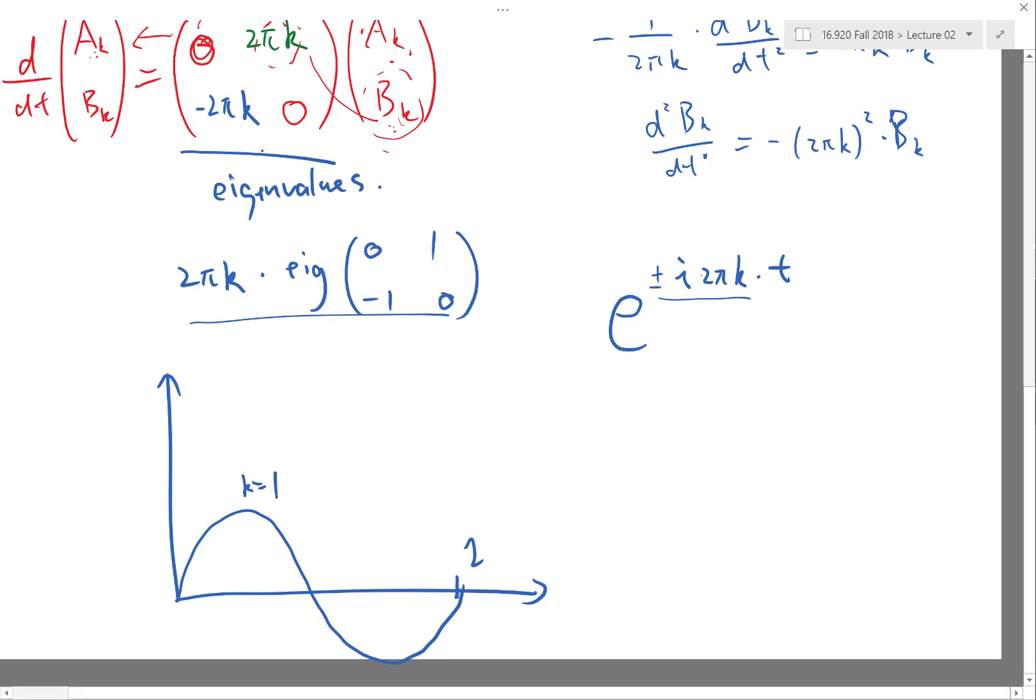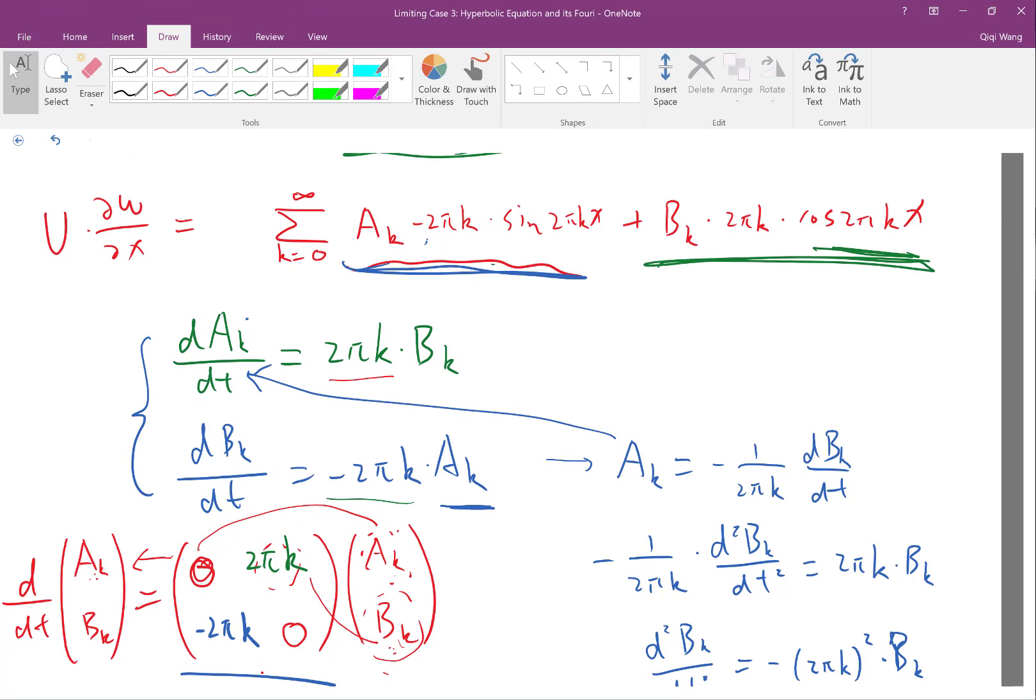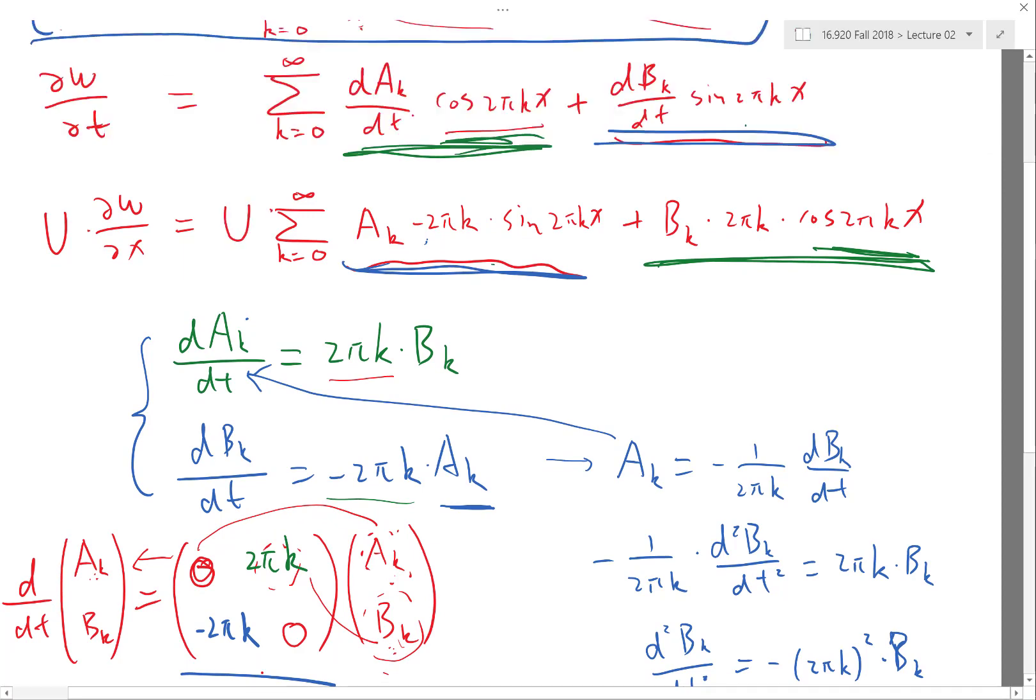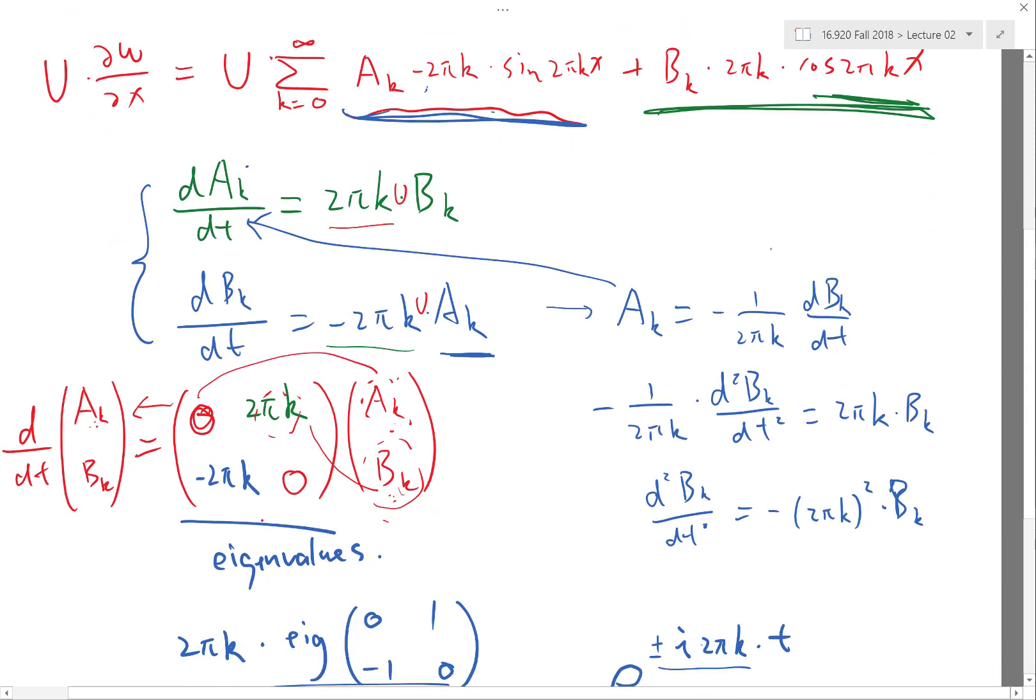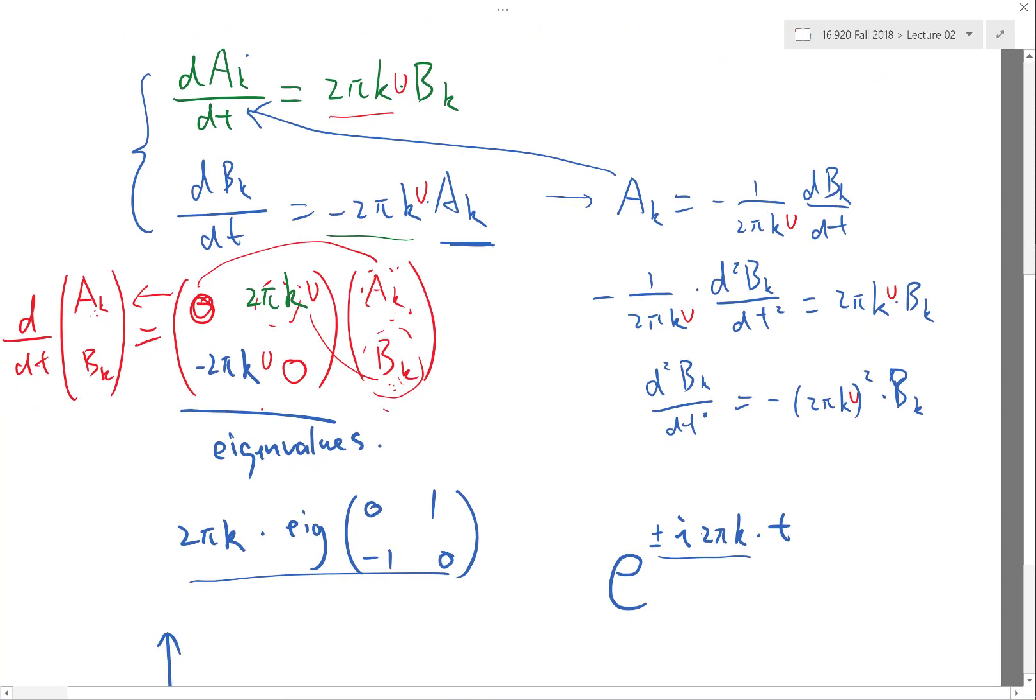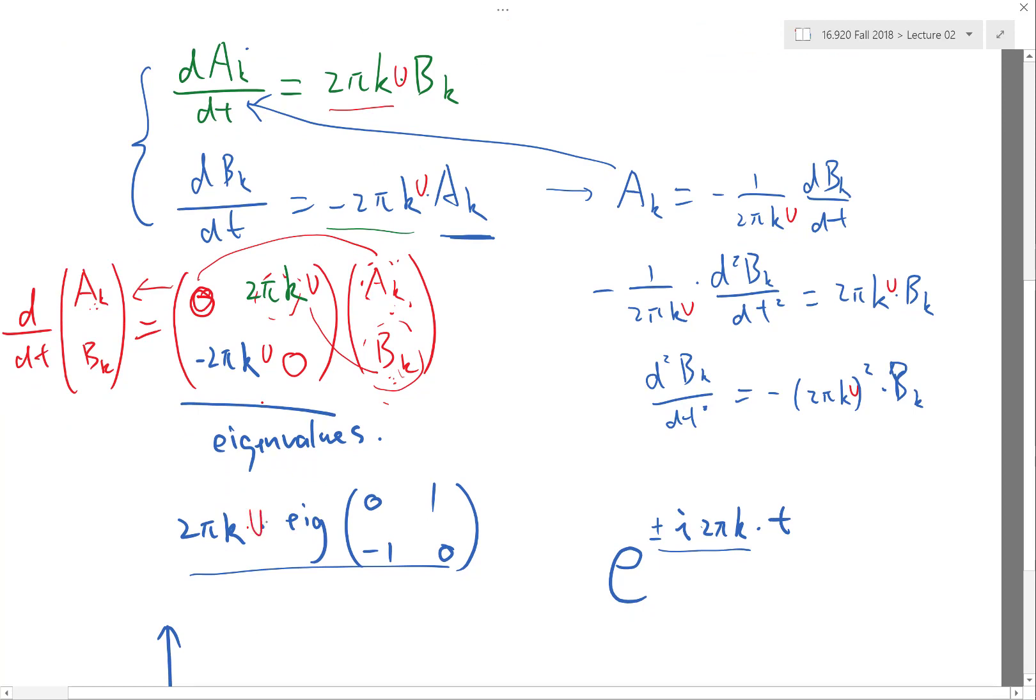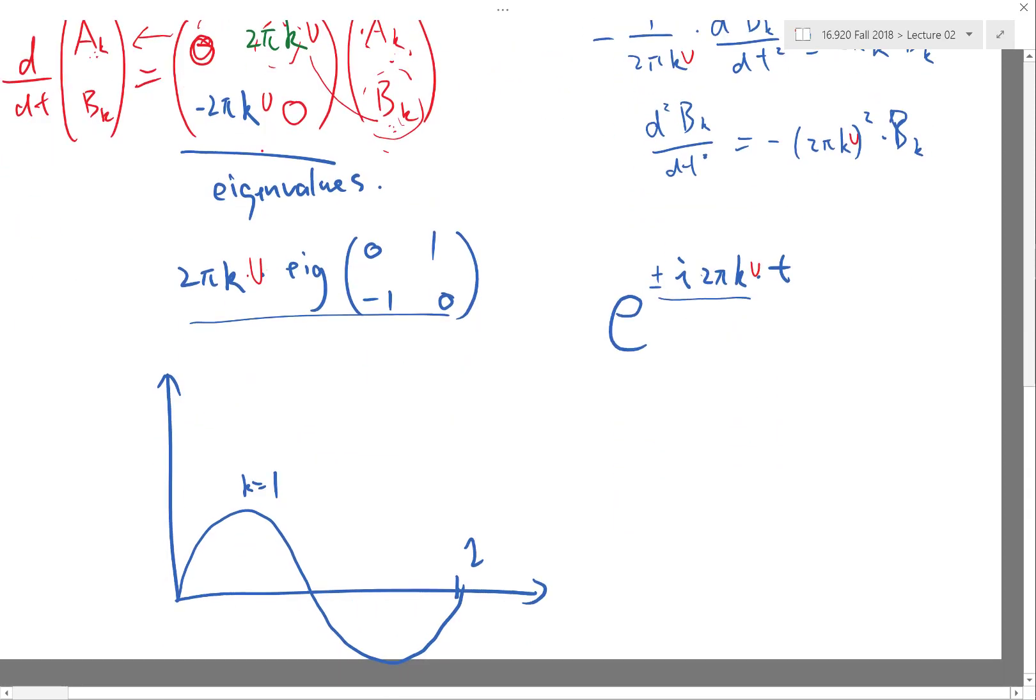I think I missed the u somewhere. Thank you for that. I think I missed the u here. When we do the matching, we have to have a u here and u here. A is equal to, we have a u here, we have a u here, we have a u here, and we have a u inside here. So here we also have a u here and u here. The eigenvalues are 2πKu times the eigenvalue of that, so we have a u here.